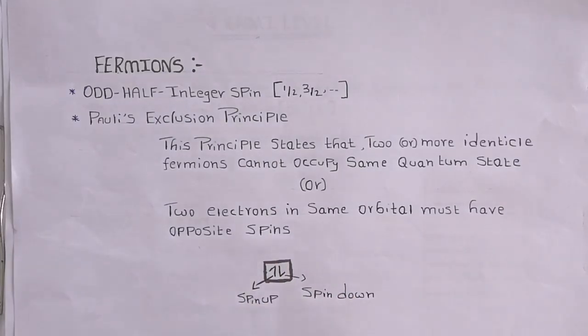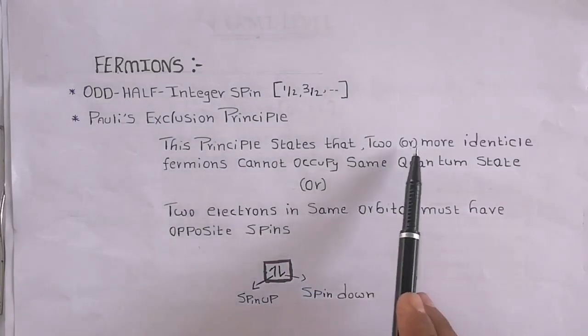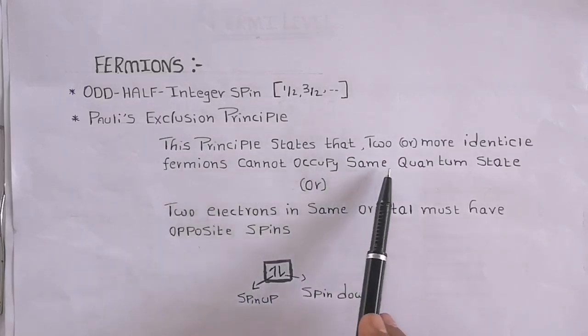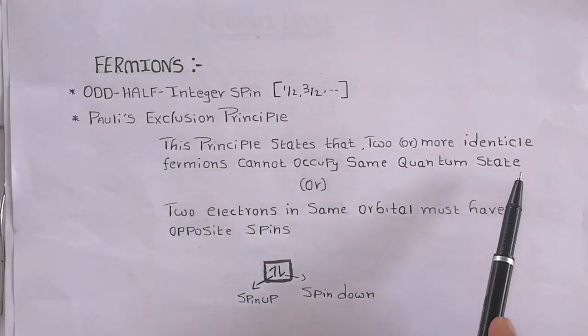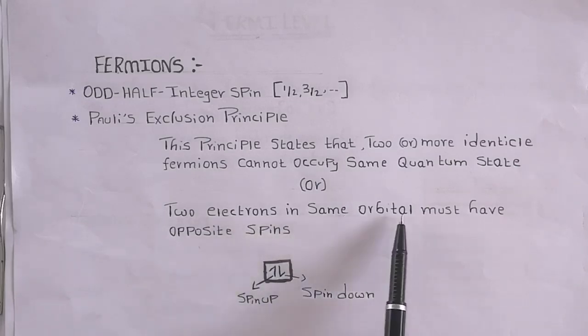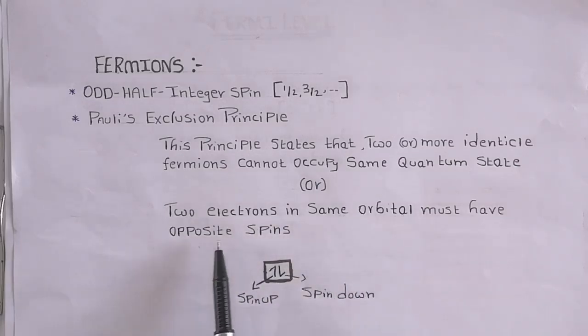These particles basically obey the Pauli exclusion principle. This principle states that two or more electrons cannot occupy the same quantum state. In simple words, two electrons in the same orbital must have opposite spins.